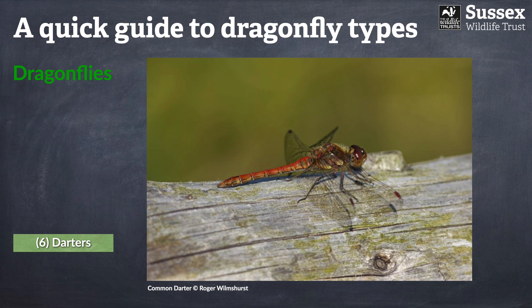The last dragonfly group are the darter dragonflies. We have six species of darter in the UK, but only two of them are relatively common and widespread. In much the same manner as the skimmers and chasers, these dragonflies also live up to their name — they love a prominent perch, often on or close to the ground, and they'll dart out to pursue their prey before returning to the same perch. They're also not a particularly shy group, and if you're very careful and quiet, you'll often be able to approach them very closely.